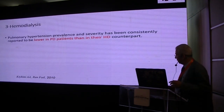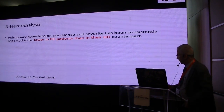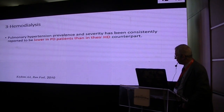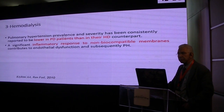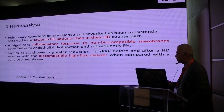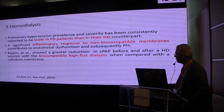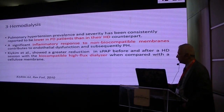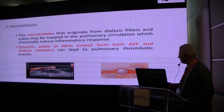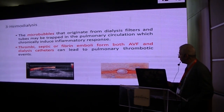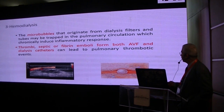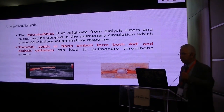In hemodialysis patients, the pulmonary hypertension prevalence and severity has been reported in many cases, and is much larger than those with peritoneal dialysis. Significant inflammatory response to non-biocompatible membranes may induce pulmonary hypertension compared to biocompatible high-flux dialyzers. Additionally, micro-bubbles that originate from dialysis filters and tubules may be trapped in the pulmonary circulation and induce pulmonary hypertension, as can septic or fibrin emboli from arteriovenous fistula or dialysis catheters.